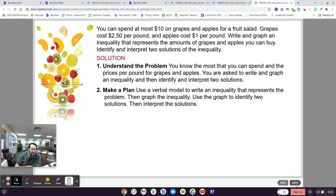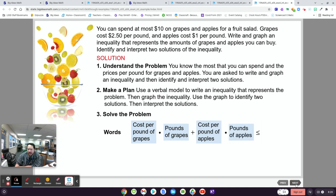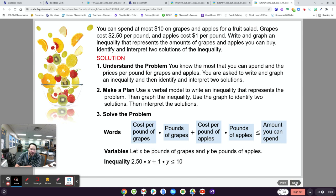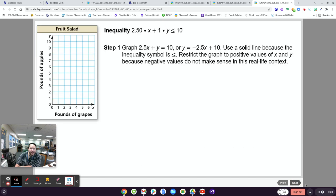So the cost per grapes times the amount of grapes plus the cost for apples has to be less than or equal to the amount that you have. So hopefully you got that. Oh, wait. Well, I guess they kept the dots in there. So 2.5x plus y is less than or equal to 10. So then you can get y by itself. You'll get this equation right here.